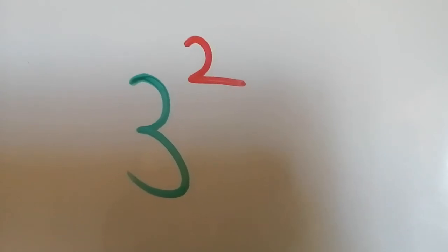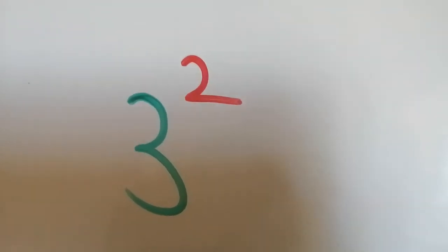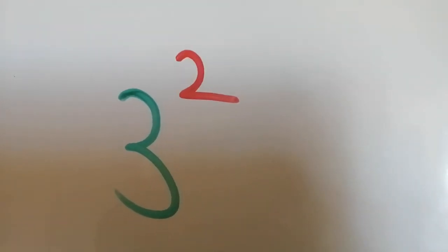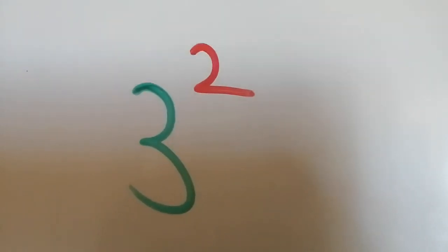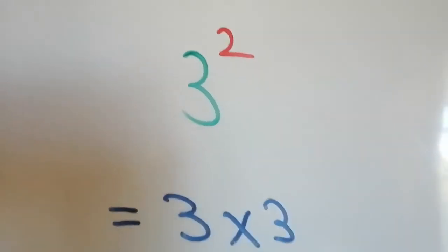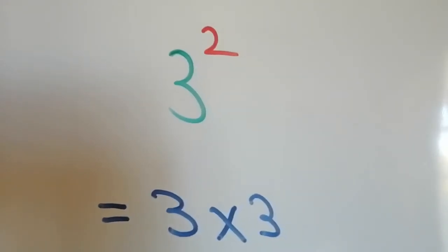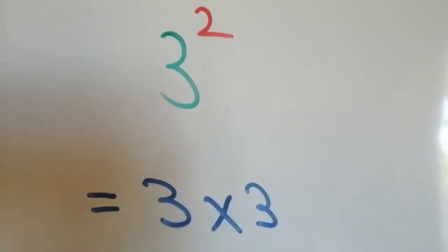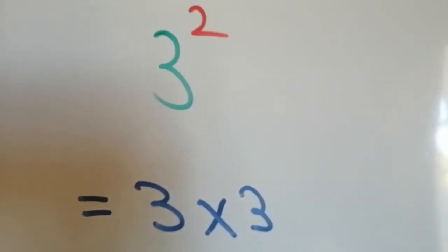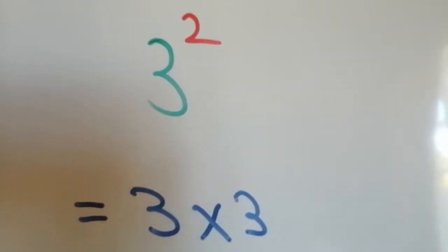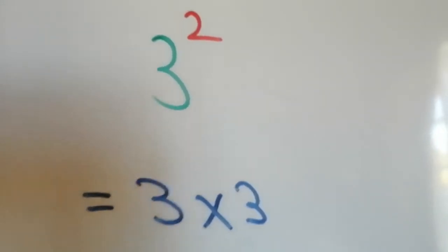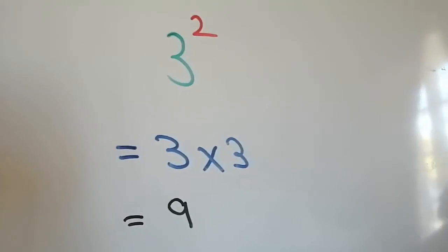In this instance, 3 to the power 2, the 3 is your root number or your base number while the 2 is your exponent, or the number that tells us how many times the 3 must be multiplied by itself. In this case, because the exponent is 2, 3 is being multiplied by itself two times, which is 3 times 3, and our answer there is 9.